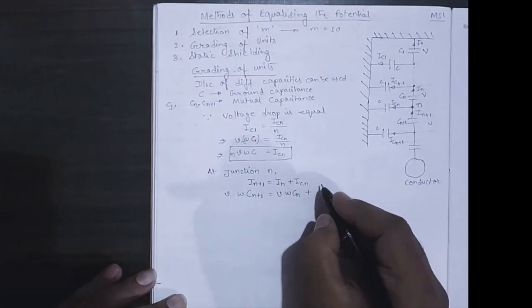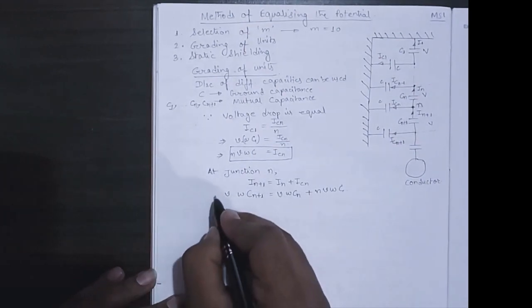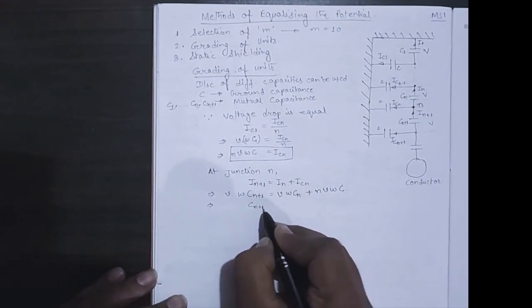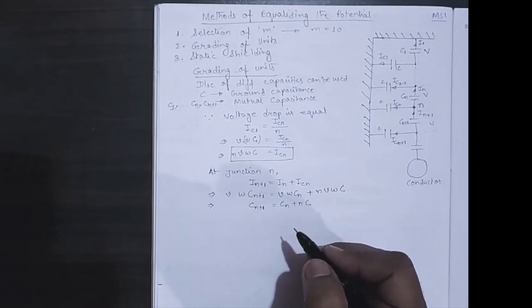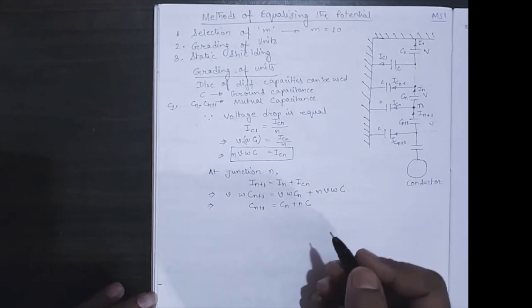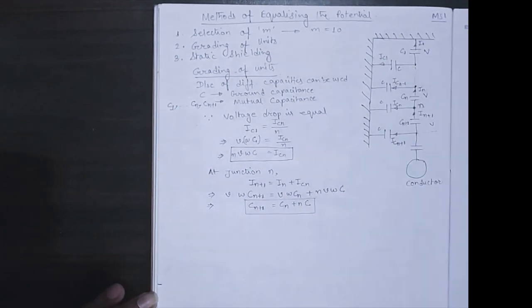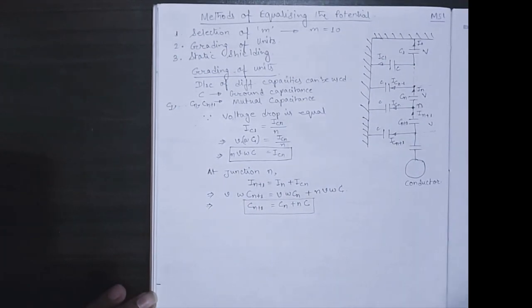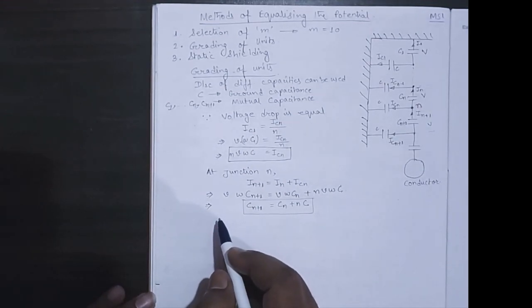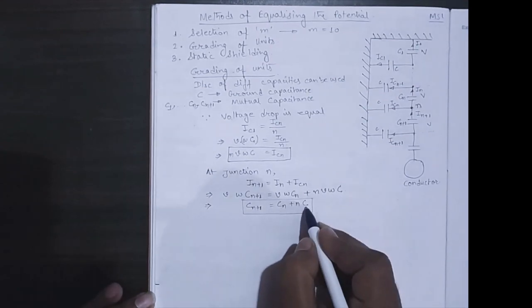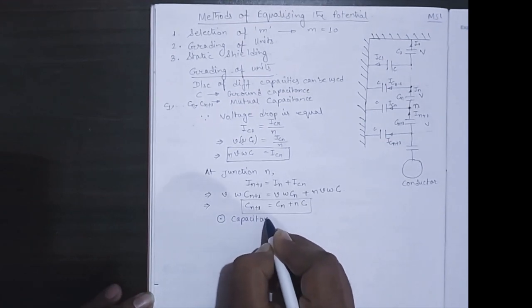And likewise voltage into impedance, sorry, voltage into reactance. No resistor is present, so voltage into reactance. So from here we are getting cn plus one equal to cn plus n c. This is important. From this you can understand that every capacitance below, that is going towards the conductor, is having more capacitance than the previous upper one.